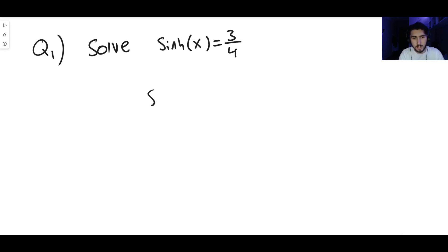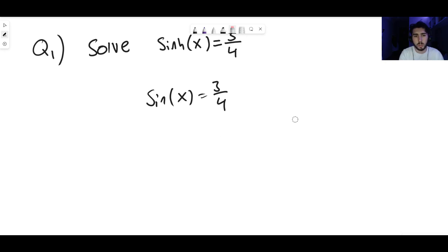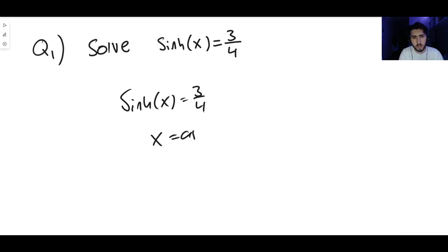The way that you do this is exactly like how you would solve the corresponding trigonometric equation. For example, if we had sine x equals three over four, we would take inverse sine on both sides and get x equals inverse sine of three over four. You do this in the exact same way - we want to get x on its own, so we take sinh x equals three over four and inverse sinh both sides to get x equals arsinh of three over four.